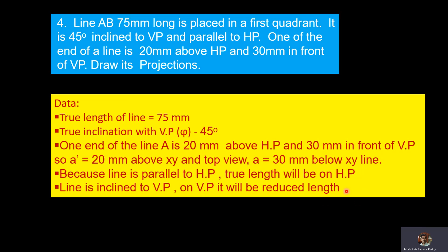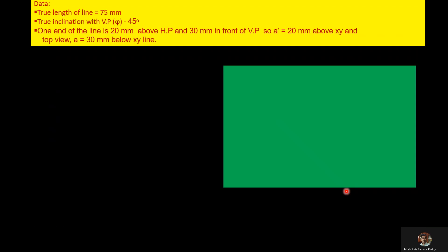Now we will draw the projection of the straight line. As a first step, draw XY line. After that, draw a projector on it. On the projector, locate A' as well as A.